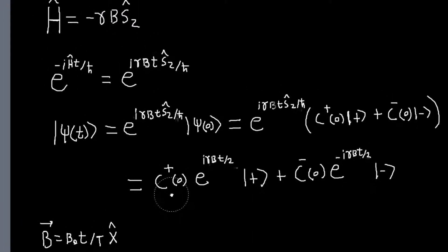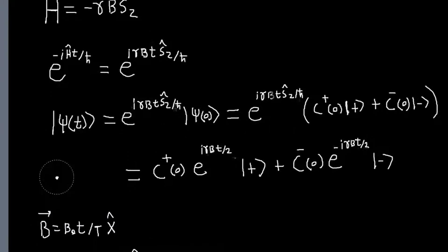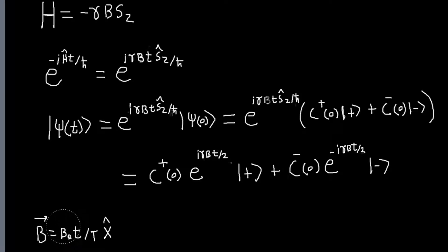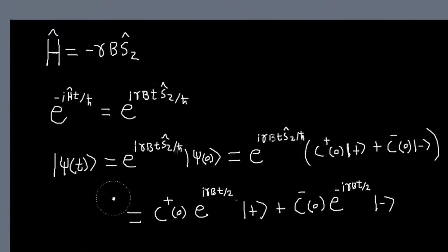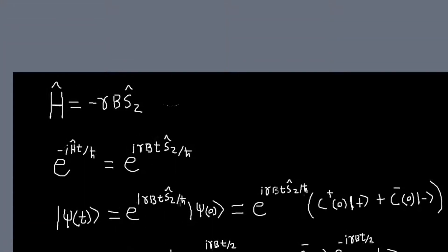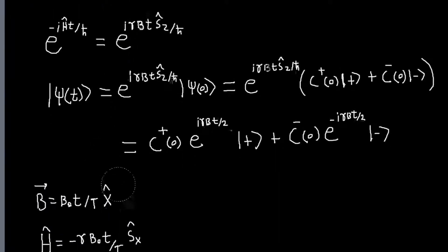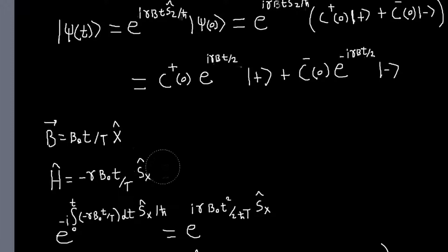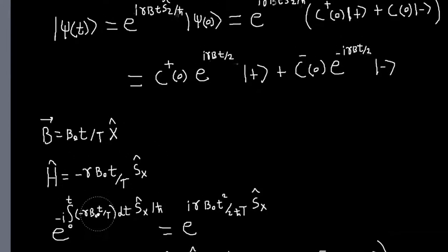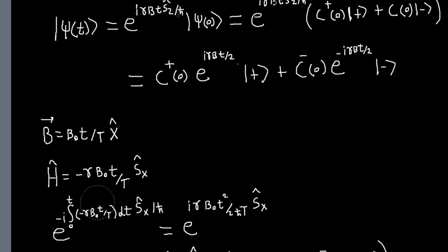Now let's do a more complicated problem. I'll make a time-dependent magnetic field — we'll say it's growing linearly in time, proportional to t. We're also going to make it point in the x-direction. The Hamiltonian in that case will be the same form, but B is a function of time, and now instead of being proportional to Sz, since it's in the x-direction, it'll be proportional to the Sx operator. Because the Hamiltonian is time-dependent, we have to use the more general expression — the integral of the Hamiltonian — and since it's just proportional to time, we can do this integral easily and we'll just get a t-squared over 2.